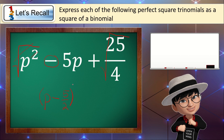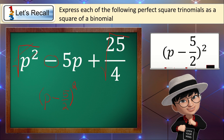The square root of 25 over 4 is 5 over 2. Then we raise this to the second power. To check, we multiply 2 times 5, that is 10, divided by 2, that is 5, times p — so we get 5p. The answer is the quantity of p minus 5 over 2, raised to the second power.